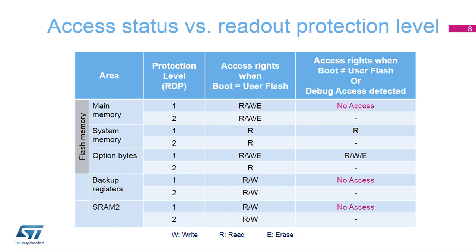This table summarizes the different types of access authorized for the flash memory, backup registers, and SRAM2, according to the readout protection or RDP level, configured boot mode, and debug access, as previously discussed.